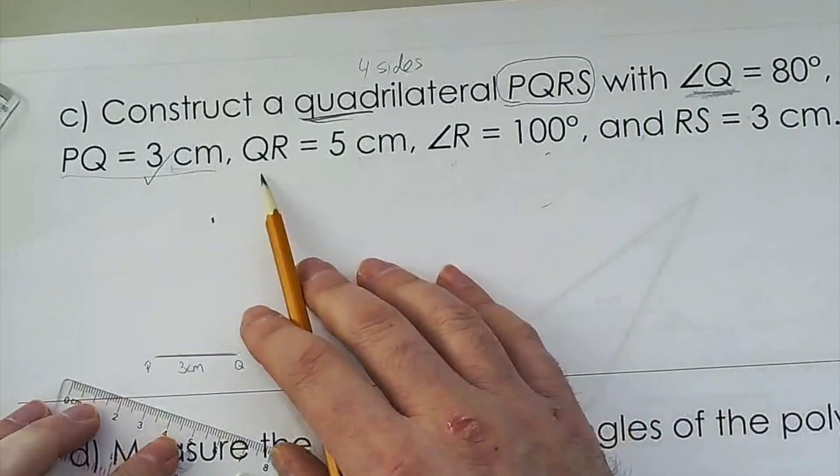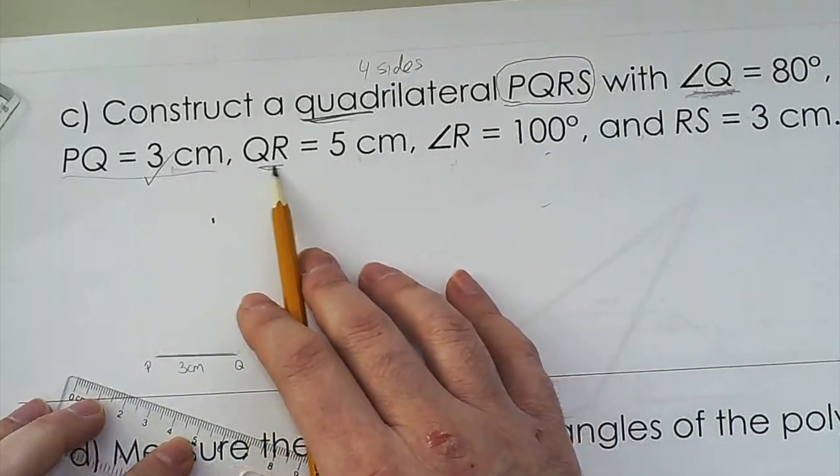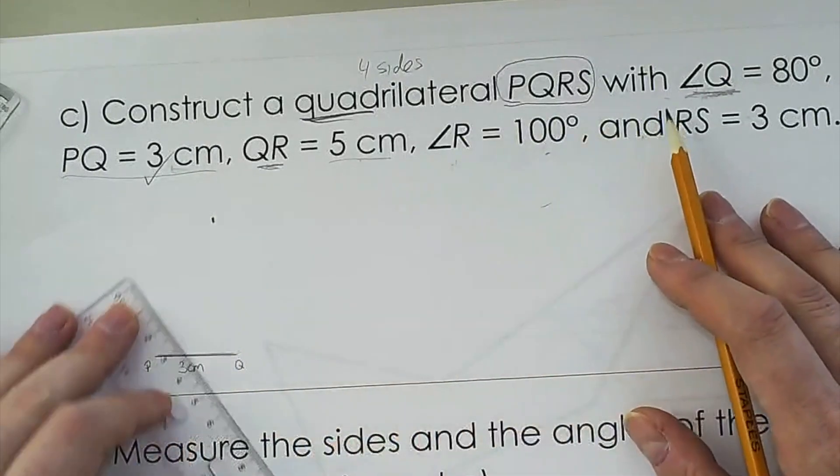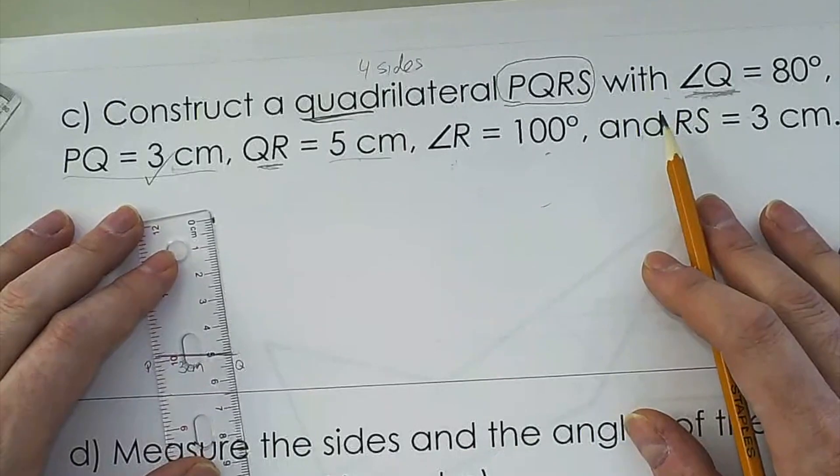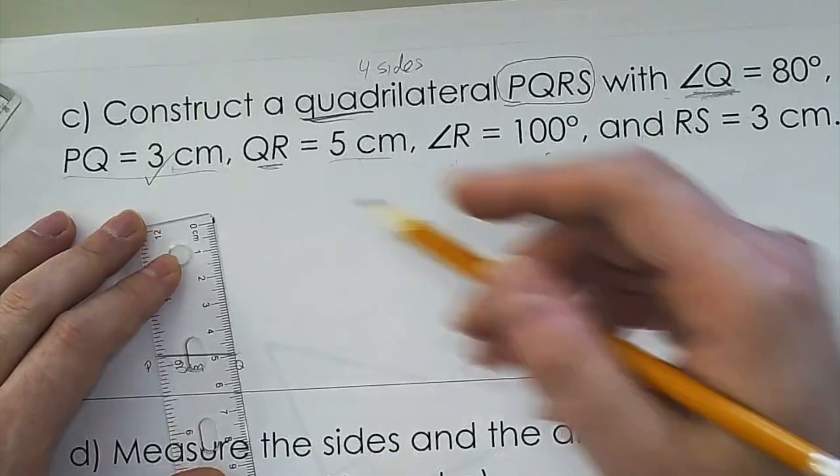And this line here, angle Q, is going to be this line here, QR, and it's going to be 5 centimeters. So I'm going to join it at 5 centimeters. Oh, would you look at that, it's so close. Very good.